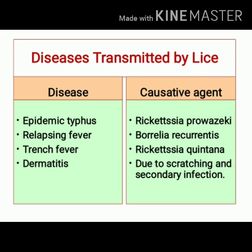Louse is an important vector that can transmit certain disease agents. Out of the three types of lice discussed, it is only head louse and body louse that can transmit certain disease agents. The diseases transmitted by lice include epidemic typhus, caused by Rickettsia prowazekii; relapsing fever, caused by Borrelia recurrentis; trench fever, caused by Rickettsia quintana; and dermatitis, which mainly occurs due to scratching and may lead to secondary infections.